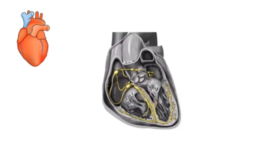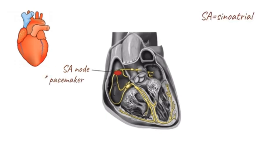The heart is a muscular pump that pumps blood around the body. This pumping action of the heart is controlled by the cardiac conduction system. The sinoatrial node, or SA node, is the pacemaker of the heart and is the point of origin of the electrical impulses that are propagated through the heart.